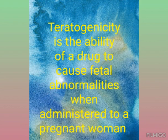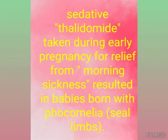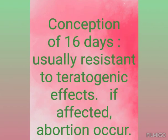The sedative thalidomide, taken during early pregnancy for relief from morning sickness, resulted in babies born with phocomelia — which is a condition of sealed limbs. This thalidomide disaster occurred in 1958 to 1961. Depending on the stage of pregnancy during which the teratogen is administered, it can produce various abnormalities.